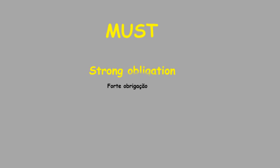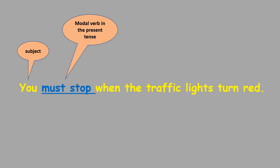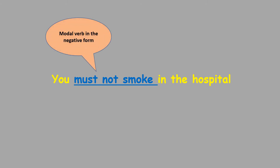You use 'must' to express a strong obligation. Example: 'You must stop when the traffic lights turn red.' Here, 'you' is the subject, 'must' is the modal verb in the present tense, followed by the main verb in the basic form — the bare infinitive, i.e. infinitive without 'to'. When do you use 'must not' or 'mustn't'? When you want to express prohibition. For example: 'You must not smoke in the hospital.' 'Must not' is the modal verb in the negative form, and 'smoke' is the main verb in the basic form or infinitive without 'to'.